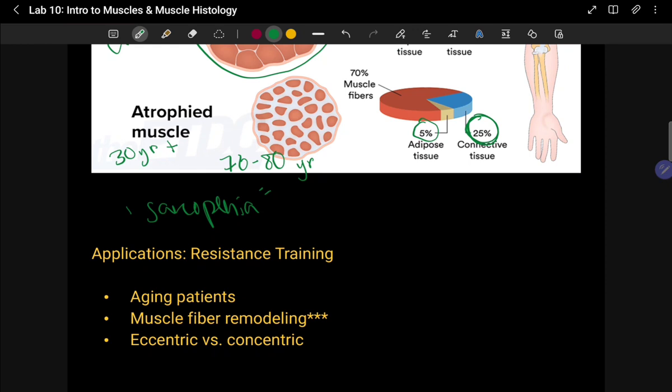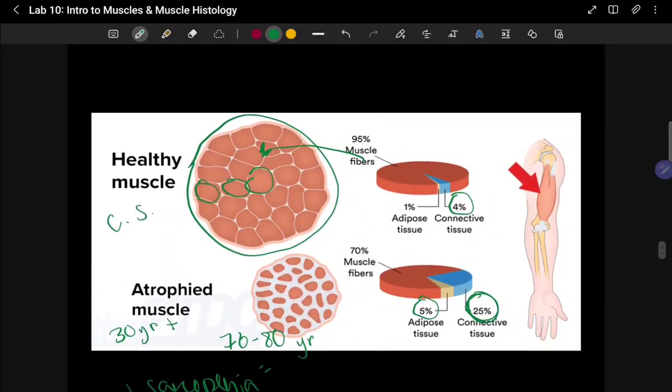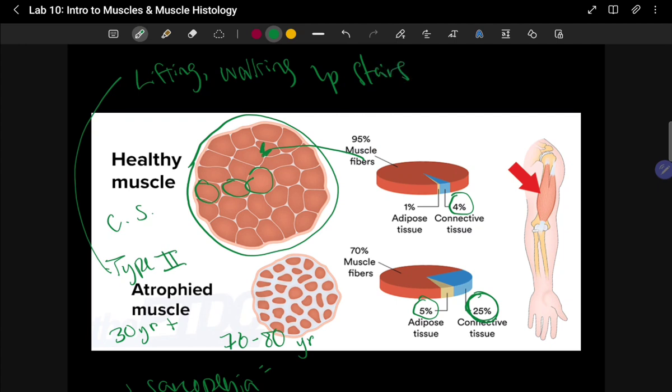I do recommend resistance training because the muscle that is usually lost through this atrophy is type 2 muscle, and that's the type we use to produce a lot of force quickly. Everyday things like lifting, walking up the stairs, getting out of a chair—things that we take for granted now—are a lot harder once this muscle atrophy sets in. You lose balance and coordination.